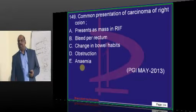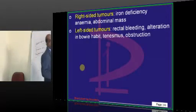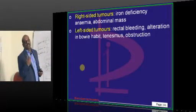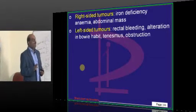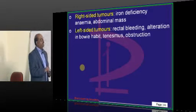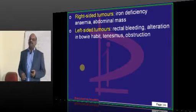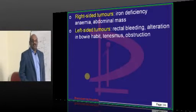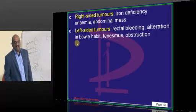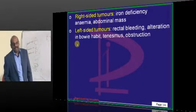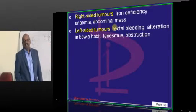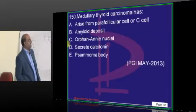Right colon versus left colon malignancy — what is the difference? Right side: iron deficiency anemia and abdominal mass are the presenting features — cecal malignancy or ascending colon. Left side: rectal bleeding, alteration in bowel habit, tenesmus, and obstruction symptoms are more on the left side. The confusing fact for the exam: since rectal bleeding is on the left side, one might expect iron deficiency anemia more on the left side — but iron deficiency anemia occurs on the right side, and rectal bleeding is a feature of the left side.